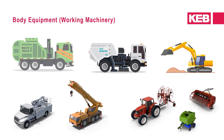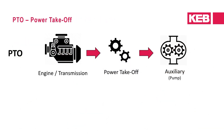A second type of body equipment involves working vehicles or mobile machinery — vehicles which typically do large amounts of work aside from being driven and require additional power. This includes both on-highway vehicles and off-highway equipment. Examples include refuse trucks and street sweepers, lift trucks and mobile cranes, construction equipment, and agricultural tractors and implements. Quite often these vehicles utilize hydraulics, where power takeoff (PTO) from the engine or transmission mechanically drives the hydraulic pump to operate body equipment such as pistons and hydraulic motors.